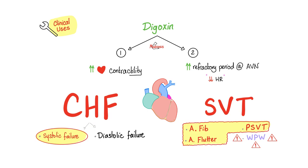We have two types of heart failure: failure during systole and failure of diastole. You should use digoxin in systolic failure — when the heart fails to contract. Because when the heart fails contraction, it's time to give a drug to boost contraction. The supraventricular arrhythmias we use it in include atrial fibrillation, atrial flutter, and paroxysmal supraventricular tachycardia.